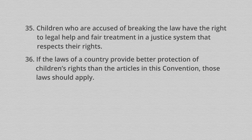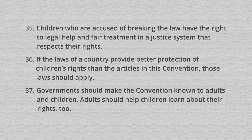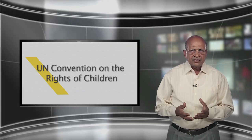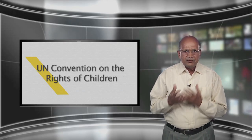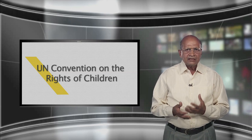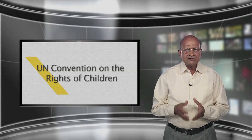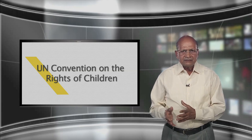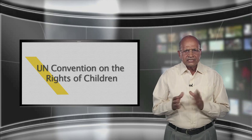36. If the laws of a country provide better protection of children's rights than the articles in the Convention, those laws should apply. 37. Governments should make the Convention known to adults and children. Adults should help children learn about their rights too. The optional protocol establishes 18 as the minimum age for compulsory recruitment and requires states to do everything they can to prevent individuals under the age of 18 from taking a direct part in hostilities.